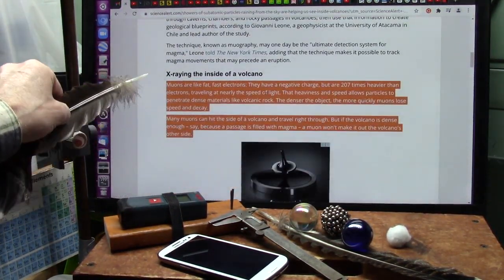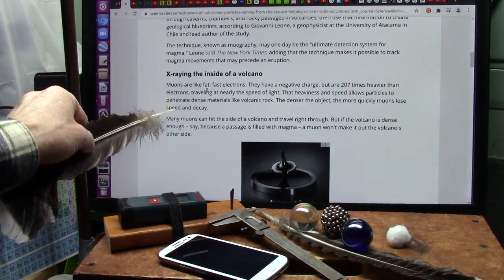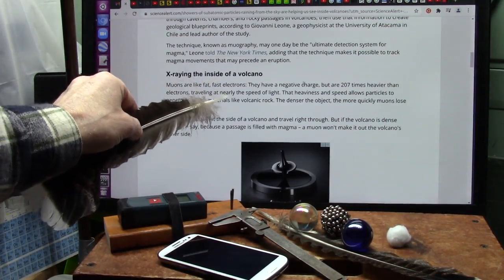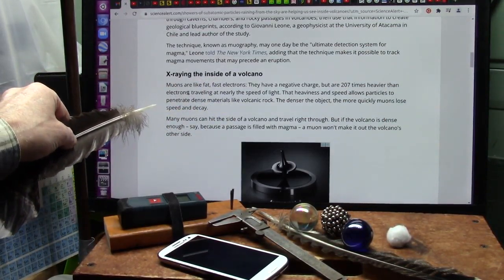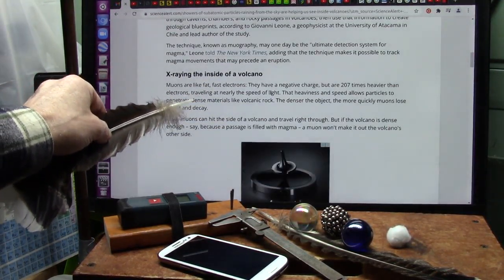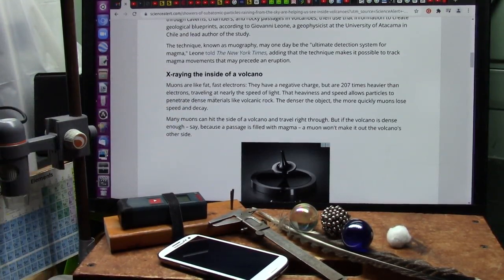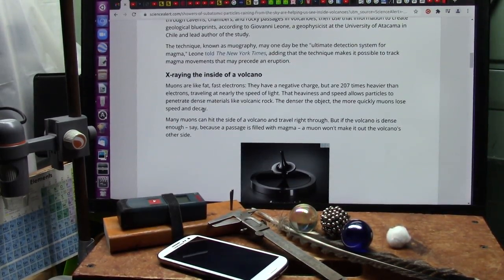Now, I believe there's a little stuff down here that we want to talk about. Muons are like fat, very fast electrons. They have a negative charge about 207 times heavier than an electron. Traveling at nearly the speed of light, that heaviness and speed allows particles to penetrate dense materials like volcanic rock.